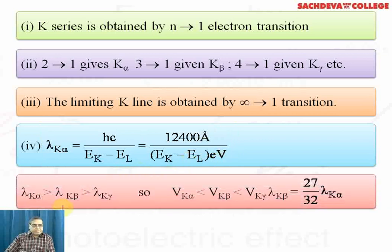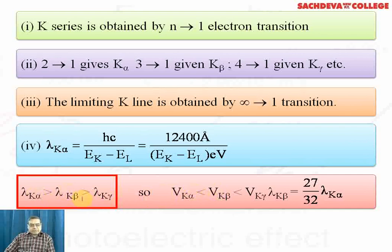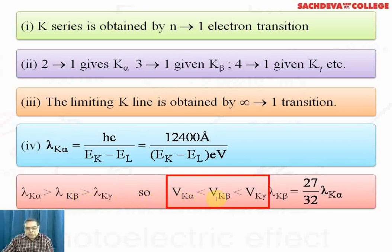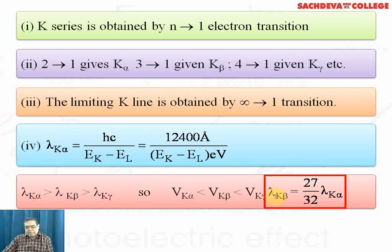We can compare the wavelength values: λ_Kα > λ_Kβ > λ_Kγ. So voltage for K alpha, voltage for K beta, and voltage for K gamma will be arranged in increasing or decreasing order. The wavelength of the K beta line will be 27/32 wavelength of K alpha line.